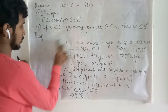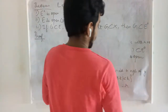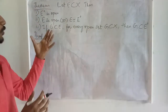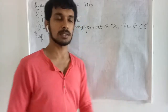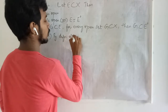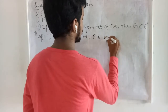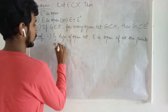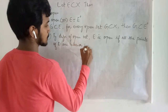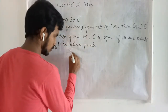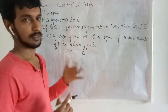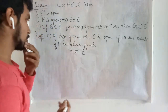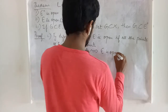For the second part of the theorem: by definition of an open set, E is open if and only if all the points of E are interior points. This means E and E⁰ are the same set. So the second part of the proof follows directly from the definition.